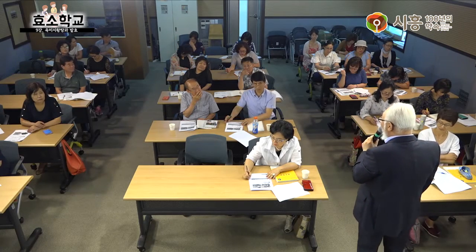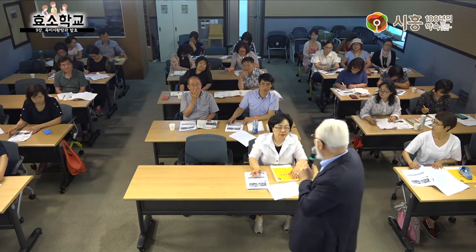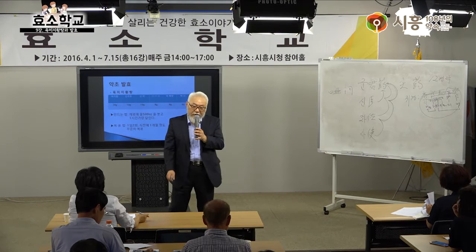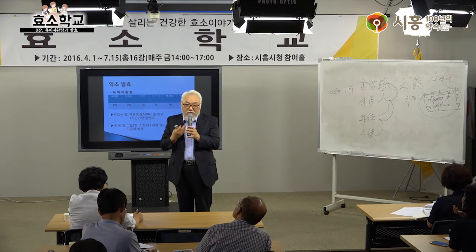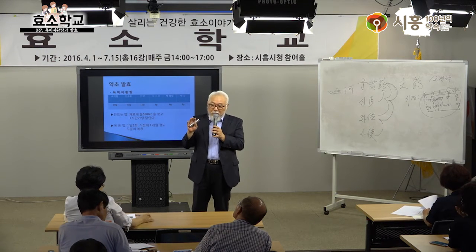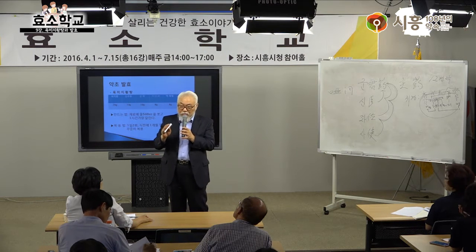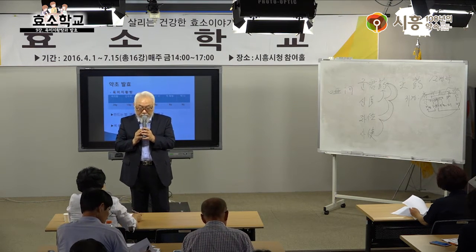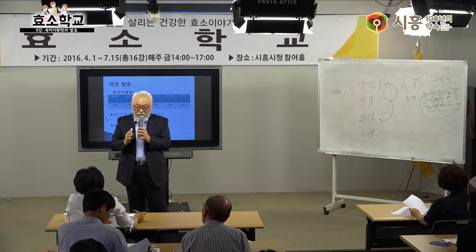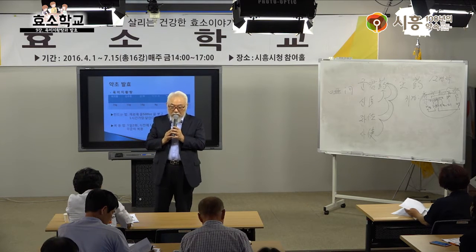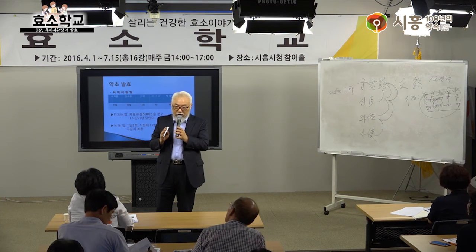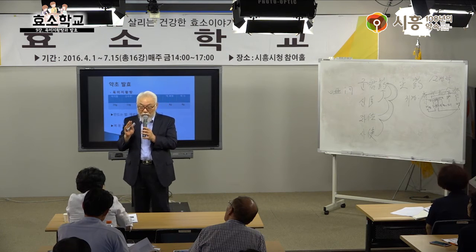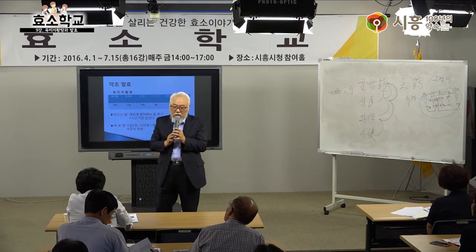끓인 약을 버리지 말고 놔두고 재탕과 새 것을 섞어 마시면 됩니다. 세 개를 놔두었다가 네 번째 날 새 것을 끓여 섞어 마시고, 이전 것은 버립니다. 이렇게 하면 한 제가 한 달을 충분히 먹습니다.